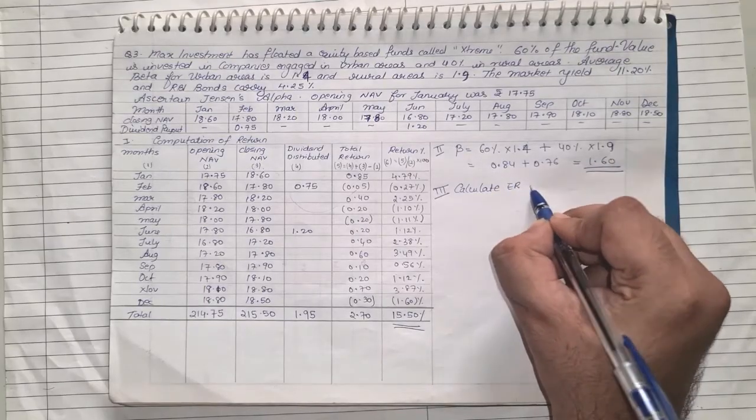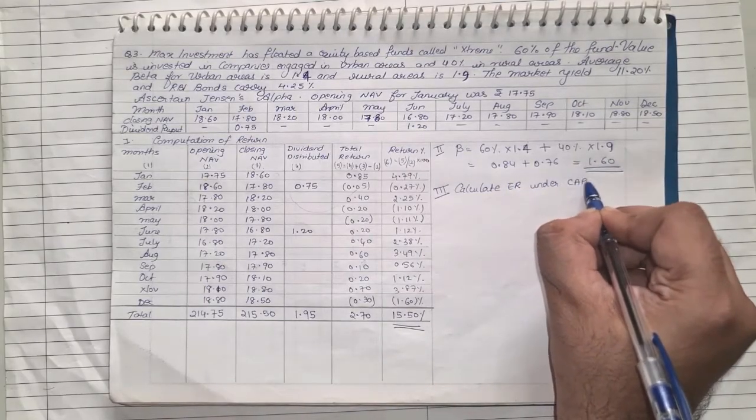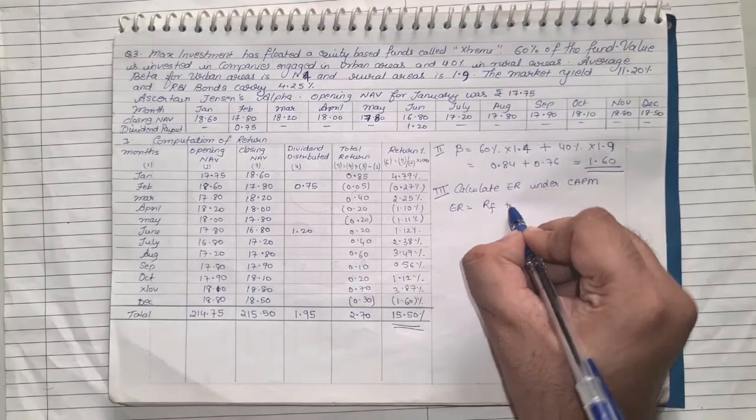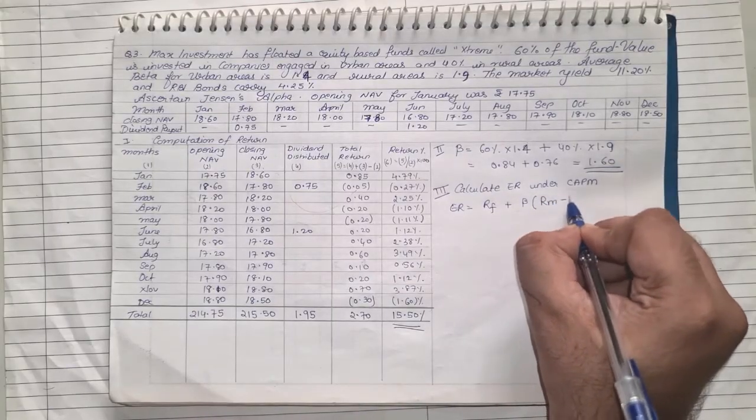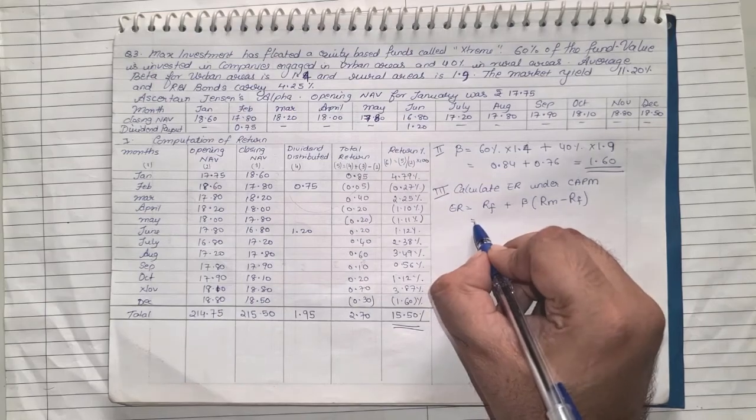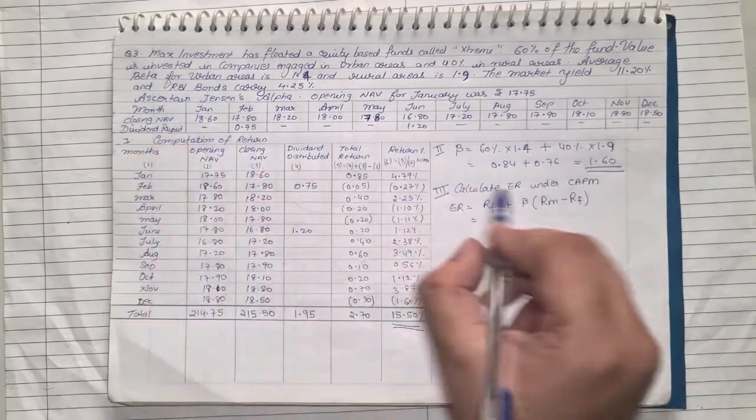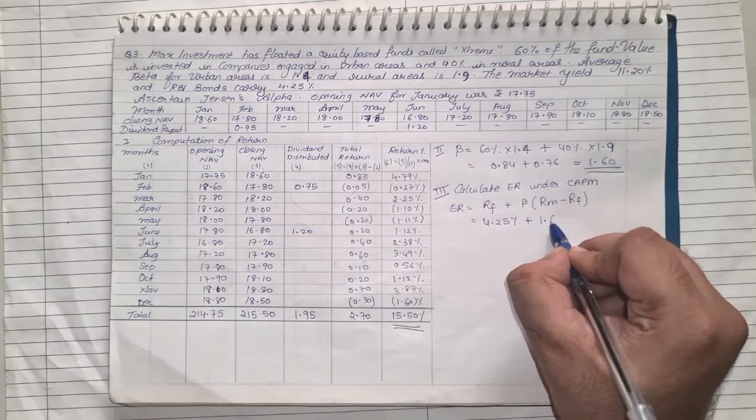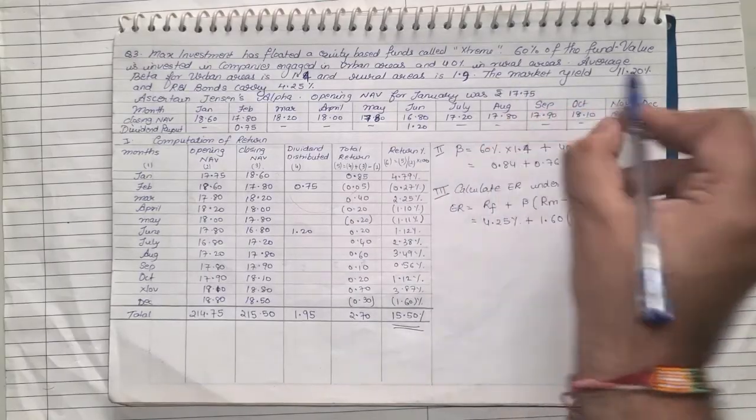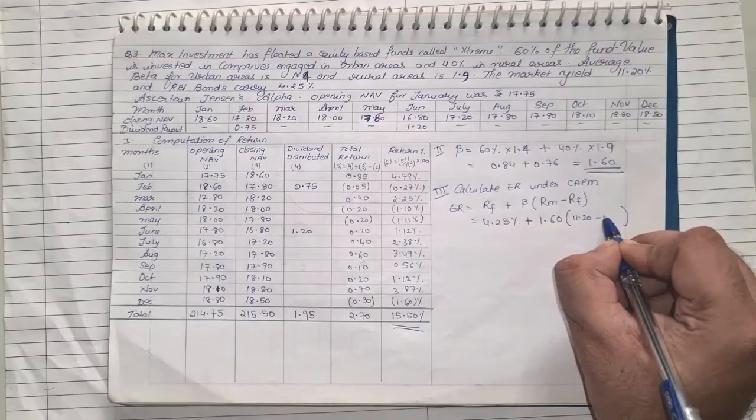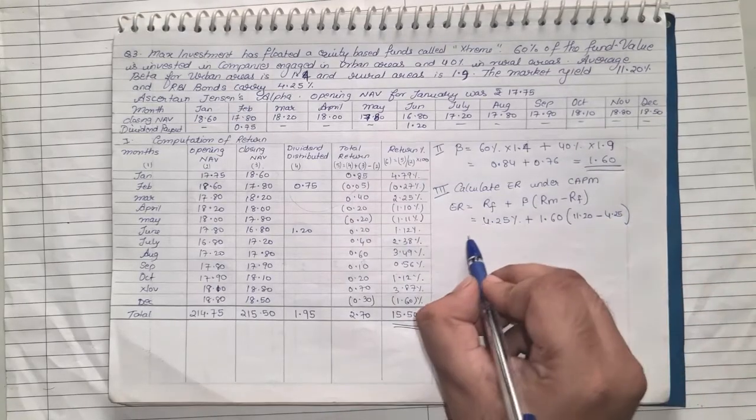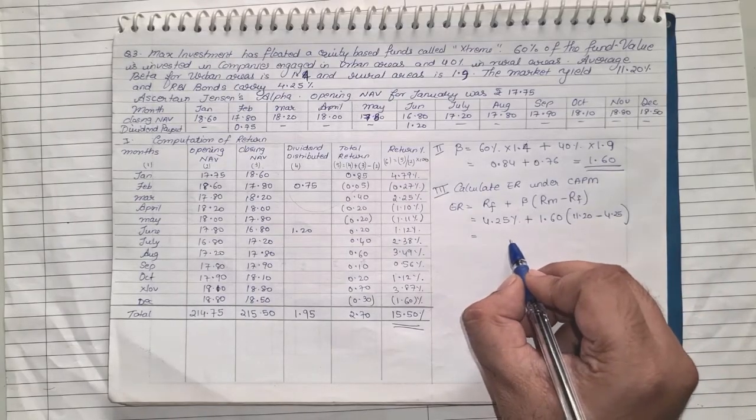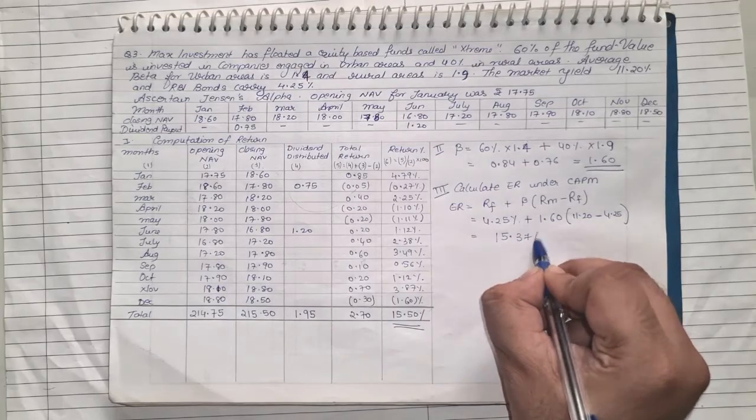Step number 3, we need to calculate the expected return under CAPM. The expected return formula is risk-free return plus beta into market return minus risk-free return. The risk-free return given is, if you see RBI bond those are always risk-free return, so that's 4.25% plus beta, beta we already found just now it's 1.6, into market return is 11.20 minus risk-free return that is 4.25 again. Same logic, you subtract, you multiply, whatever answer you get added to 4.25. We'll get the value as 15.37%.